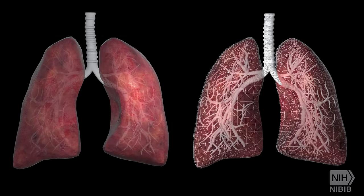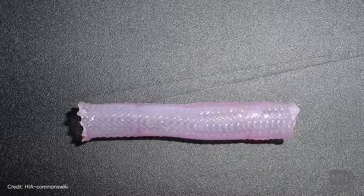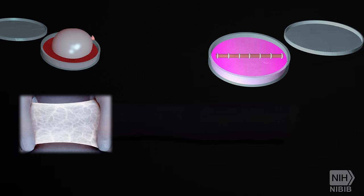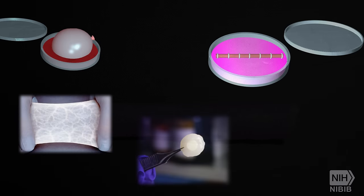Sometimes the scaffolds dissolve over time, but others remain to provide support to the organ. Some examples of tissues and organs that have already been successfully tissue engineered and implanted in humans include bladders, small arteries, skin grafts, cartilage, and even a full trachea.